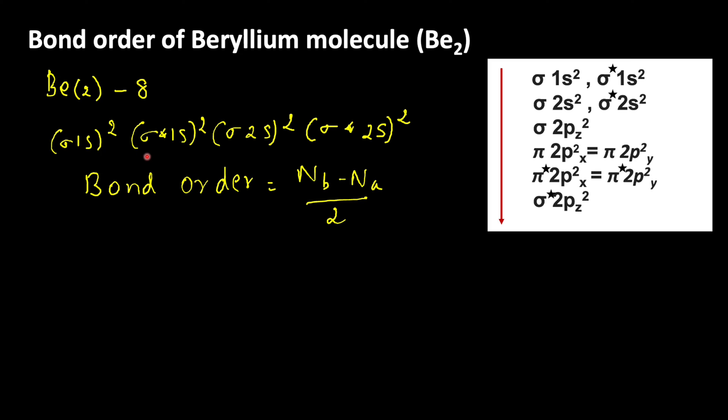Let us calculate the bonding electrons of beryllium molecule. Sigma 1s2, so 2 electrons. Sigma 2s2, 2 electrons. So total 4 electrons are there in bonding electrons.